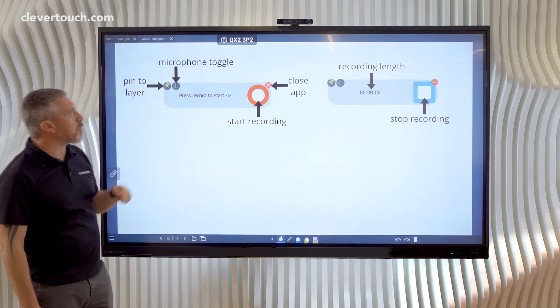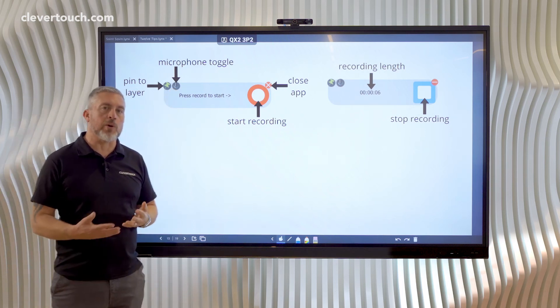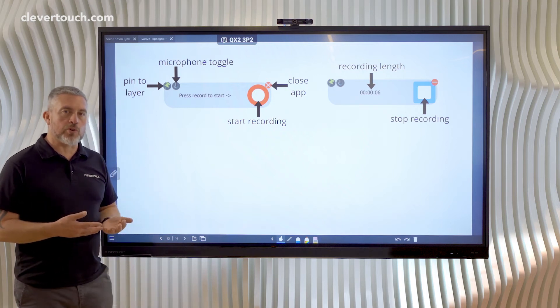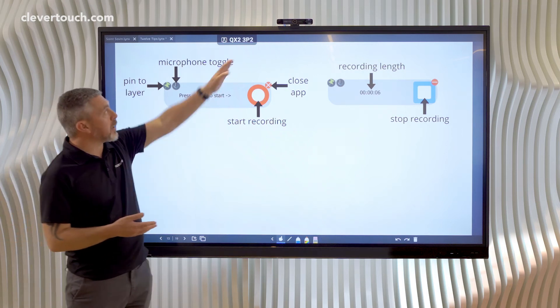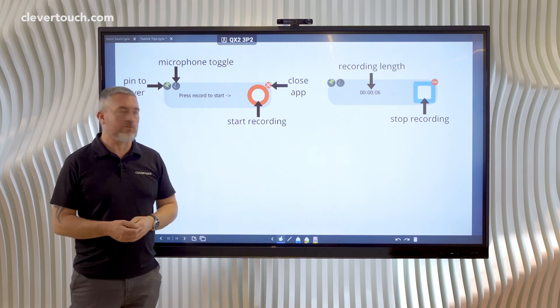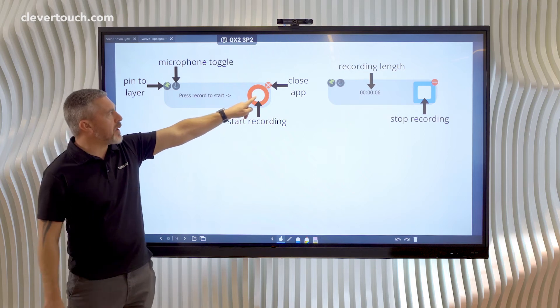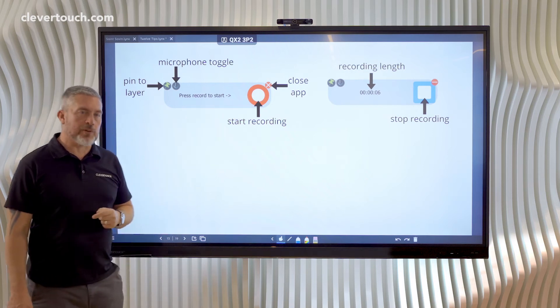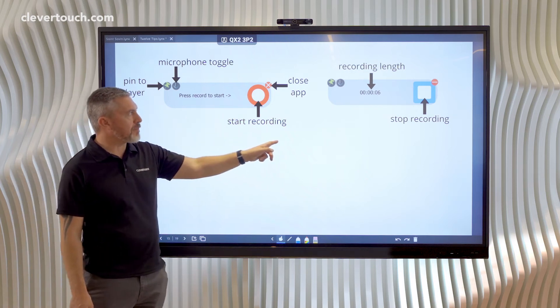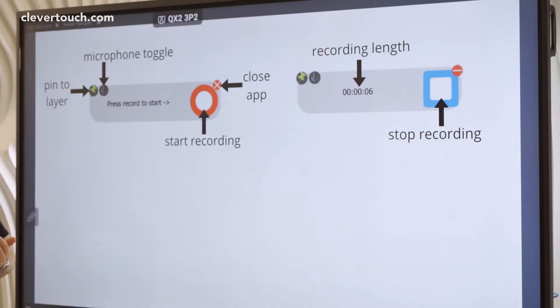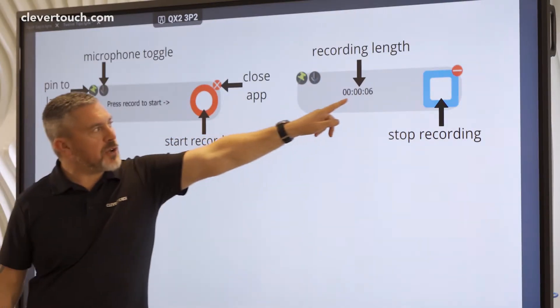You can toggle the microphone on or off, and it will pick up the microphone on your device, or in this case it's picking up the microphone in the Impact screen. You can close the app, and you tap on the big red button there to start recording.